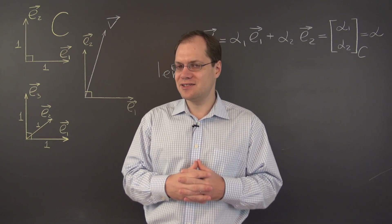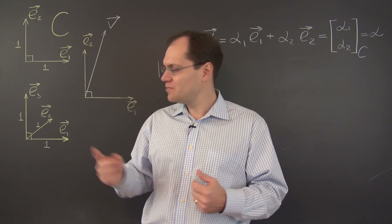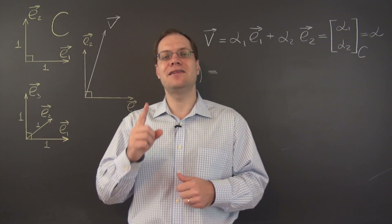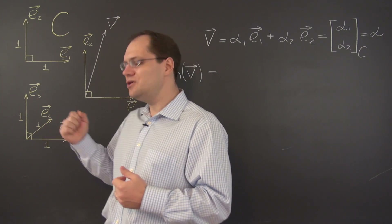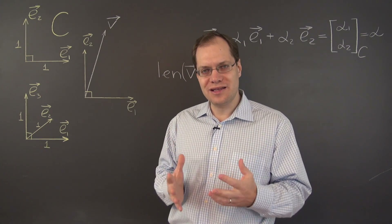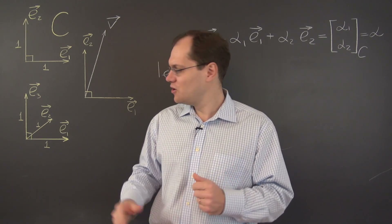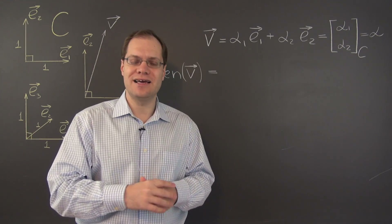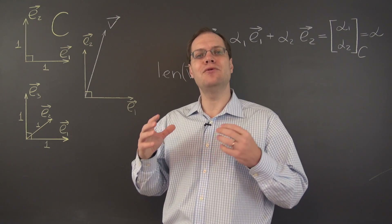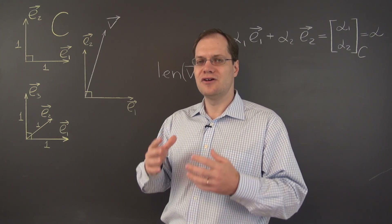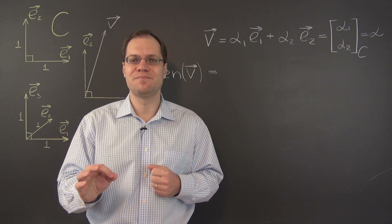We have already used Cartesian bases in this course. Until now, it didn't matter that the vectors were unit length — what mattered was that they were equal length. But now the fact that they're unit length will be of critical importance. All the answers we obtained would be different had these vectors not been unit length, even if they were equal length. If these vectors are equal length but not unit length, I would no longer call this basis Cartesian.